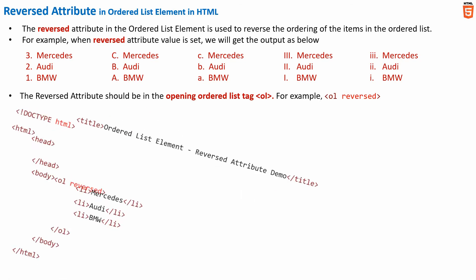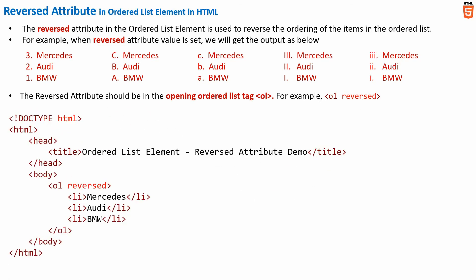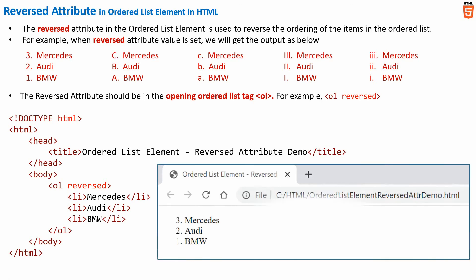Let me quickly show you a sample code snippet where we have used the reverse attribute. In the sample code snippet, we have the reverse attribute in the opening ordered list tag. Please note here we have not specified the ordering in which the ordered list should be displayed — that is, whether it will be number ordering, alphabet ordering, or Roman numeral ordering. Thus when this code is rendered in the browser, we will get the output as shown here. As we have not specified the ordering, by default this will be number ordering.